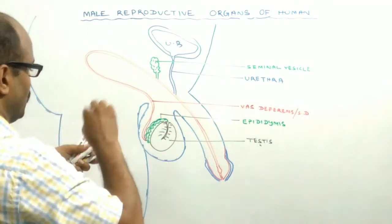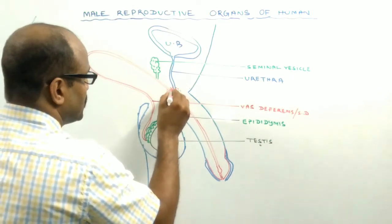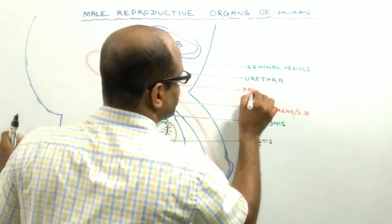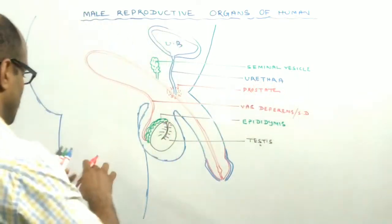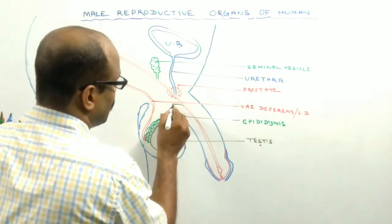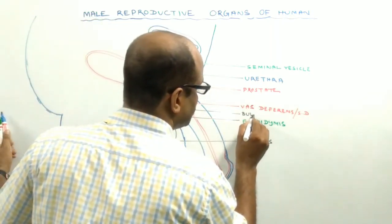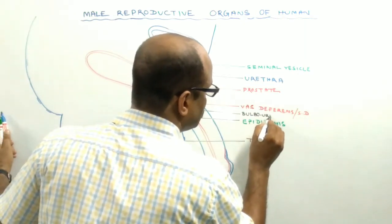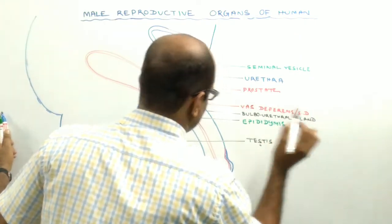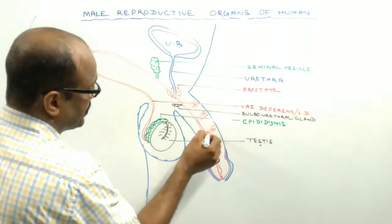Another gland is also present around this region — this gland is the prostate gland. This urethra also receives the opening of another gland, the bulbo-urethral gland. And this is the structure of the penis.